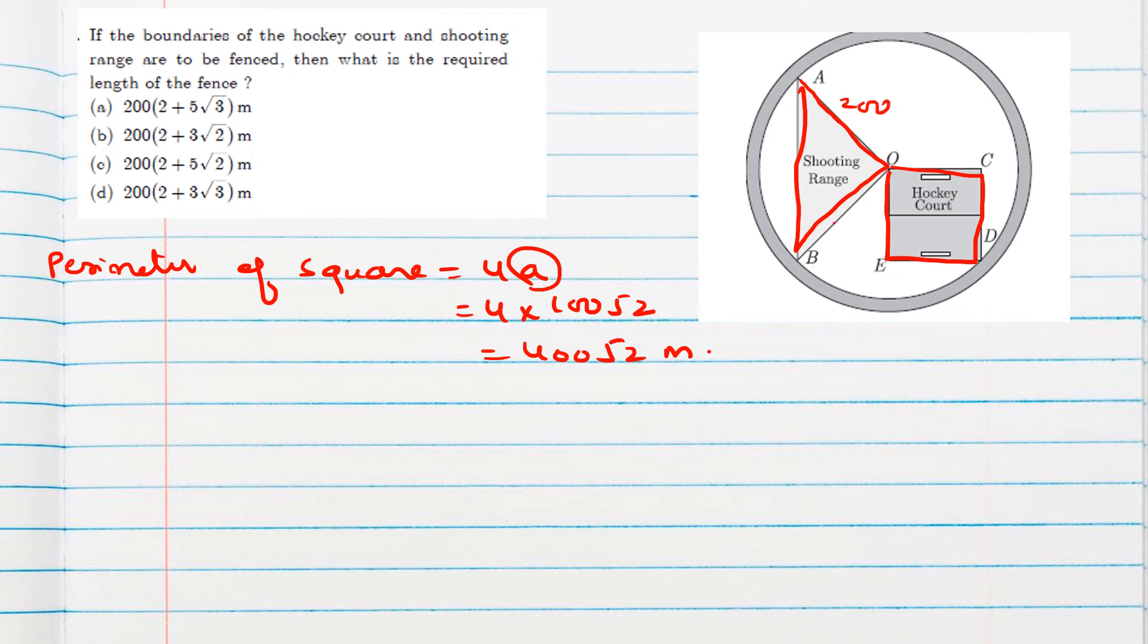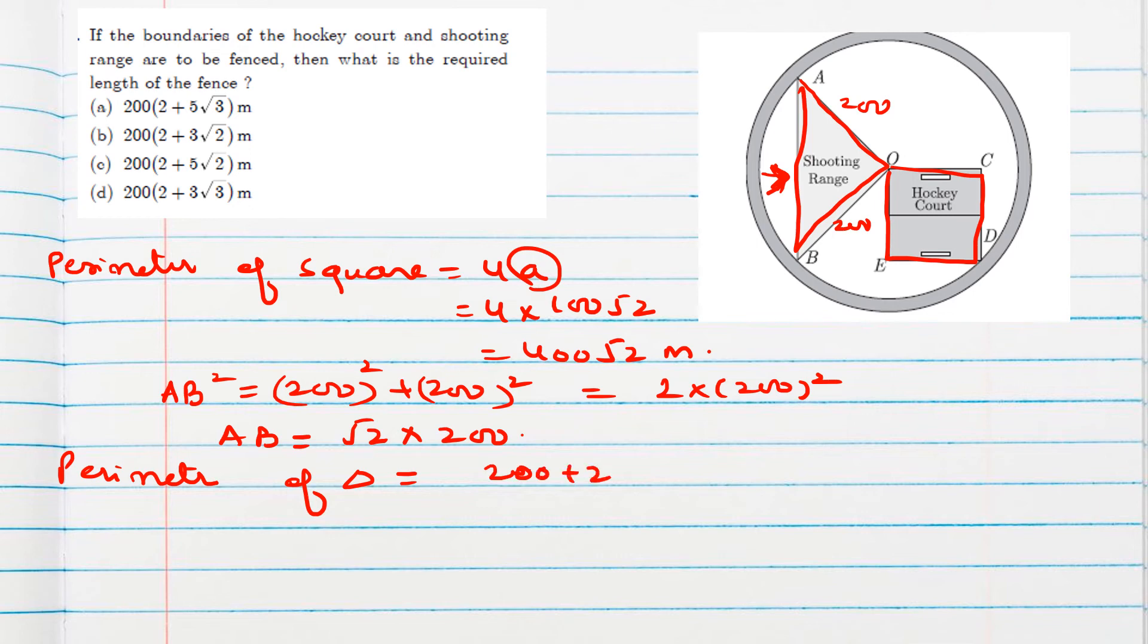Now how to find perimeter of triangle? This is given 200, 200. This we have to find, which is hypotenuse. So again, AB square will be 200 square plus 200 square. So 2 times 200 square. So AB will be taking square root, root 2 into 200. This is AB. So perimeter of triangle will be 200 plus 200 plus 200 root 2.